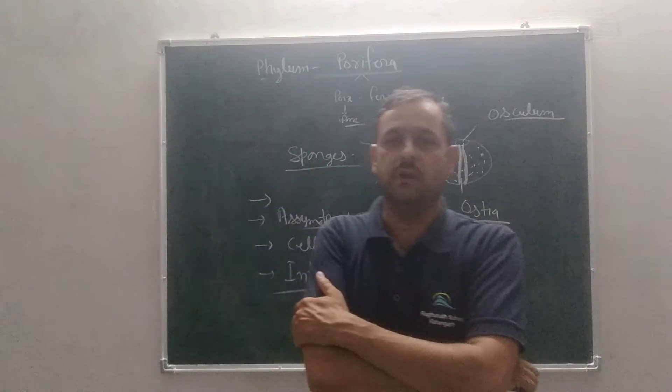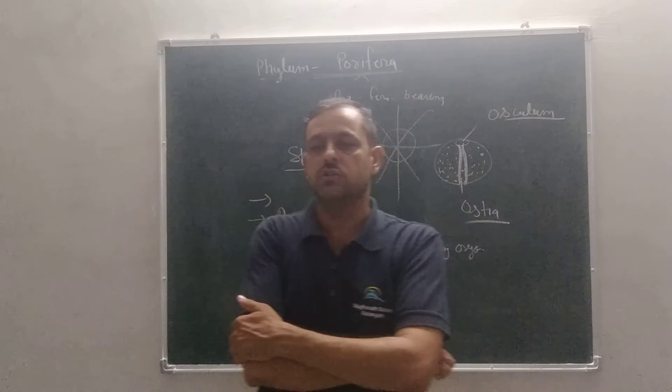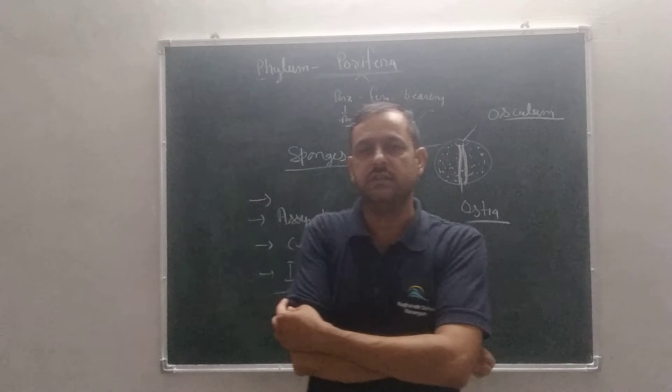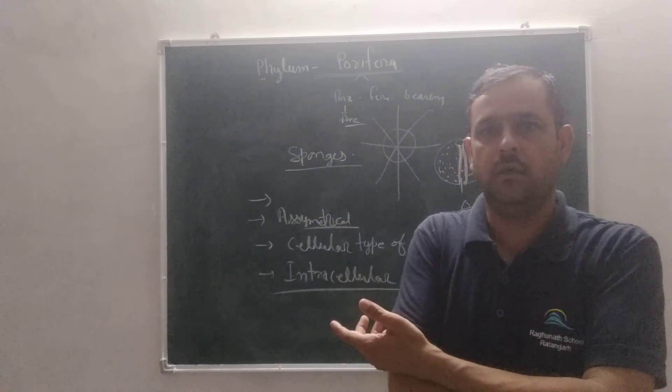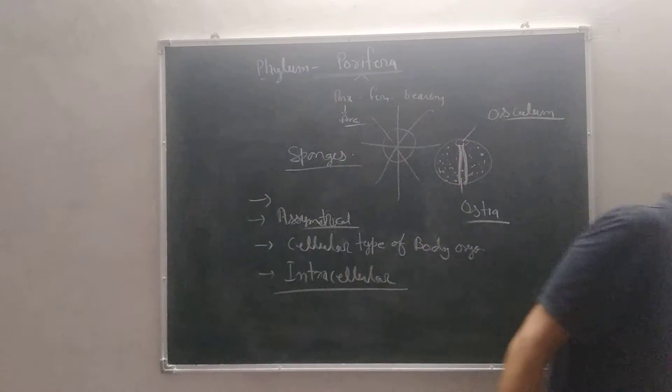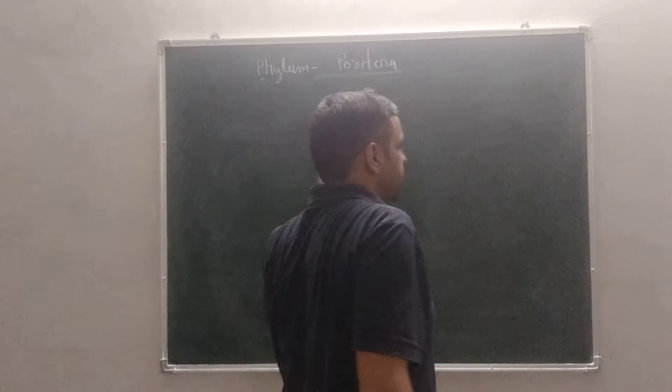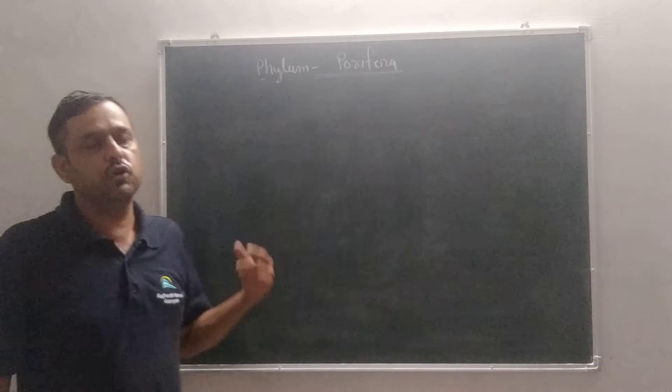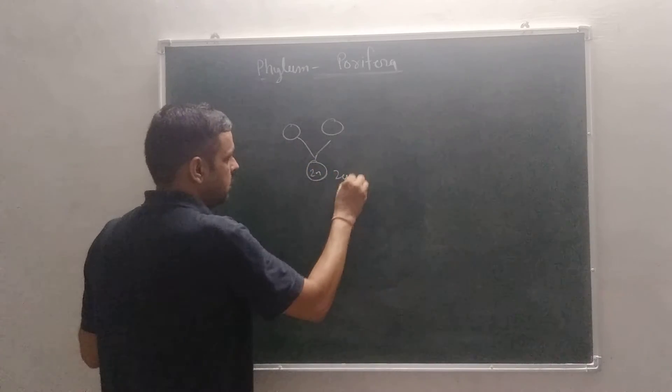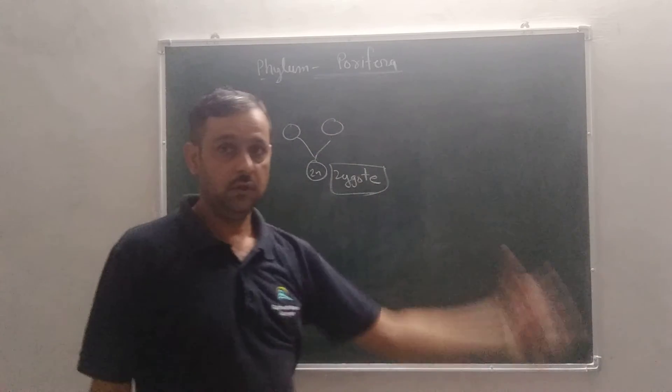These animals are bisexual. Means both male and female sex organs are present in a single organism. They can reproduce by fragmentation, by asexual reproduction and by gamete formation in sexual reproduction. Fertilization is internal. What is fertilization? Fertilization is the fusion of gametes. Male reproductive part produces male gamete and female reproductive part produces female gamete. Both the gametes are fused and form zygote. This process is called fertilization.